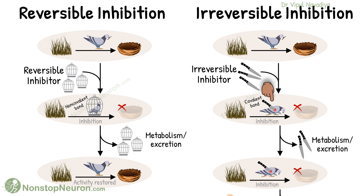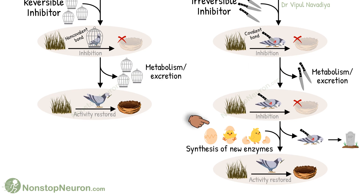So once the enzyme is inhibited, it becomes permanently inactive. The removal of the inhibitor is not enough to restore the enzyme activity. The activity is restored only by synthesis of new enzyme. Thus, this is irreversible inhibition. An example is the inhibition of the cholinesterase enzyme by organophosphate.